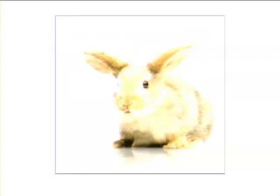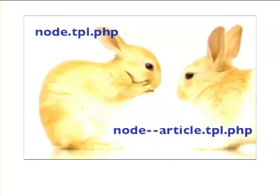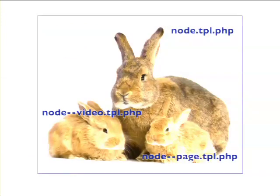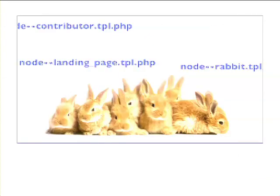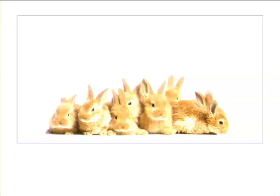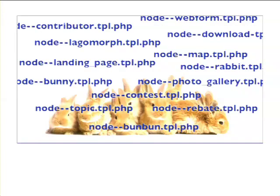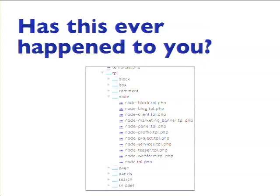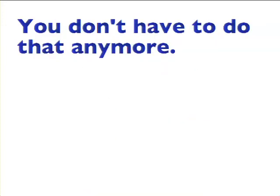This is a bunny. I named my node template 'node.tpl.php' — she's really cute. Then I got a friend named 'node--article.tpl.php.' Pretty soon I had more bunny templates, and even more. Has this kind of thing happened to anybody? Node block, node blog, node client, node node node — this is from something we did two or three years ago before we knew better. There are like 12 templates there. You don't have to do that anymore.